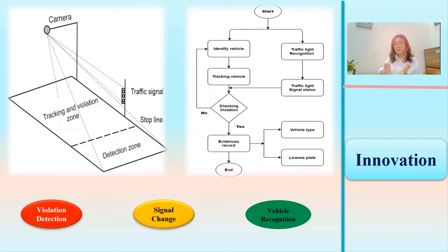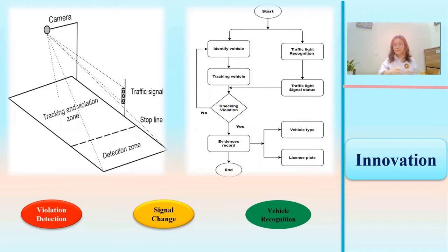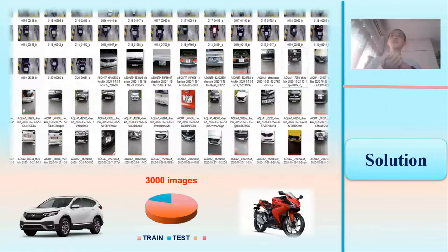The image is given to the camera as input, where it is processed and compared with the traffic signal state, then checked for a violation. During this process, the number plate of the vehicle is detected and an evidence video is recorded.